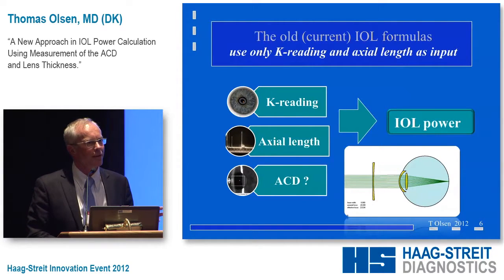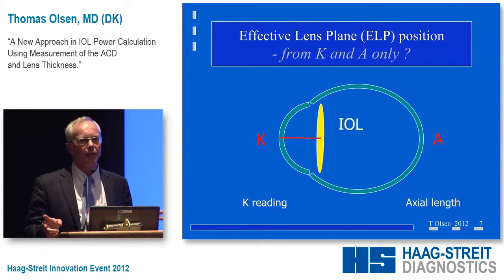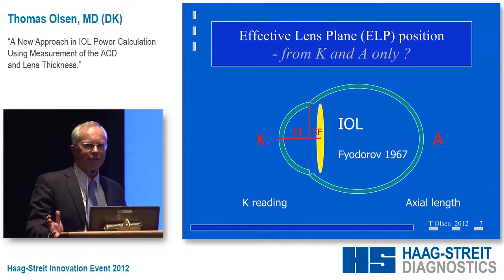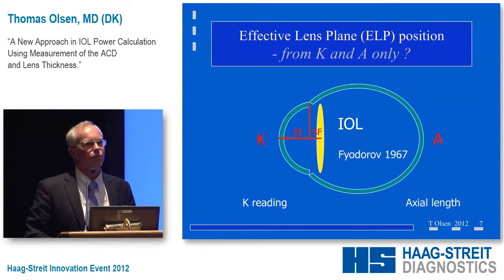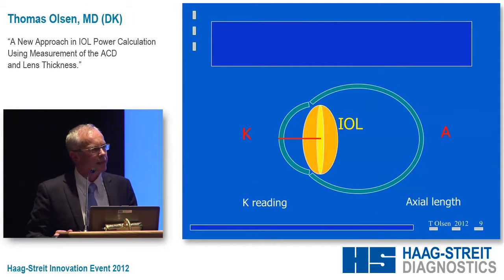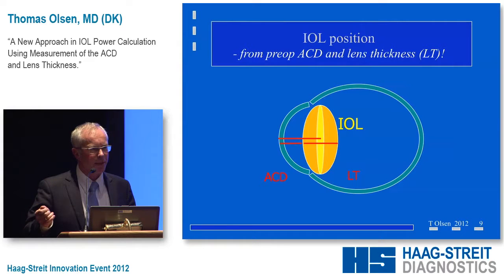You have to realize this is a major source of error because the axial length error is so small. So what we are talking about is: if you have the K reading and the axial length, from these two measures you need to know where the IOL ends up in the eye. The concept of the corneal height formula was invented by Fyodorov in 1967 — nothing new. This formula was developed at a time with ultrasound and iris clip lenses, so it's not necessarily useful for us today. We can do better.